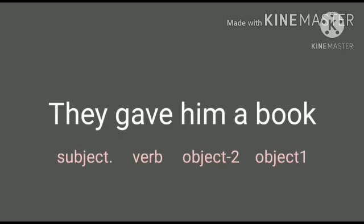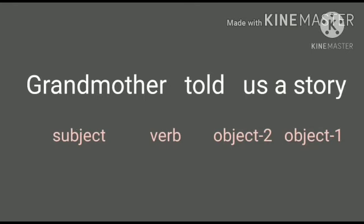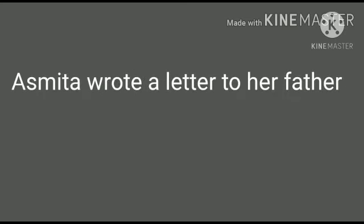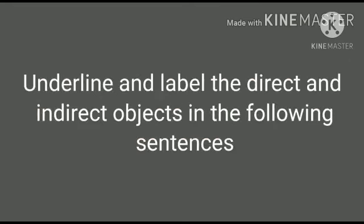Some transitive verbs can have two objects. For example, sentence 1: 'They gave him a book' - 'They' is the subject, 'gave' is the verb, 'him' is object 2, 'a book' is object 1. Sentence 2: 'Grandmother told us a story' - 'Grandmother' is subject, 'told' is the verb, 'us' is object 2, 'story' is object 1. Sentence 3: 'Asmita wrote a letter to her father' - object 1 is the direct object, object 2 is the indirect object.